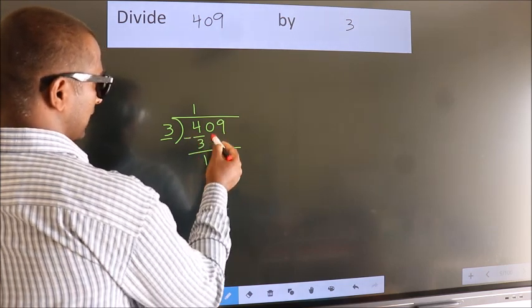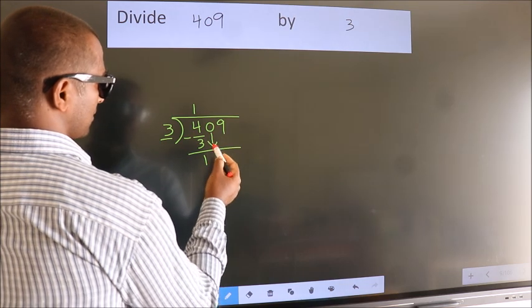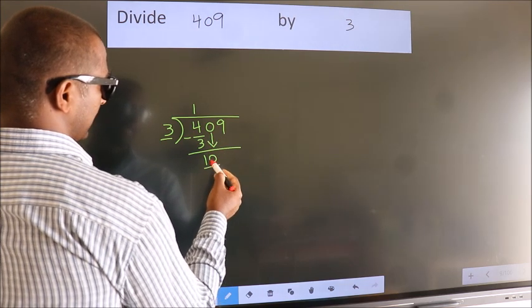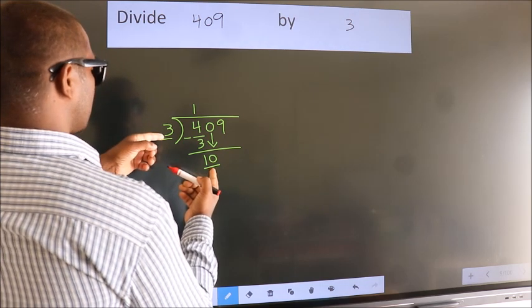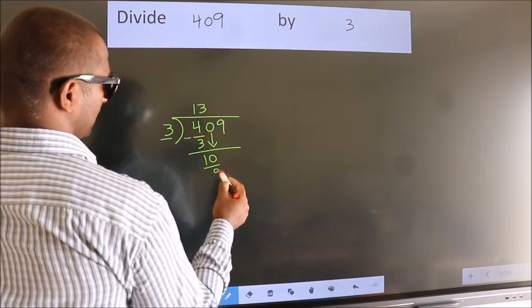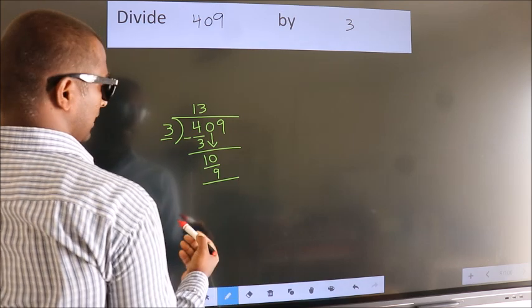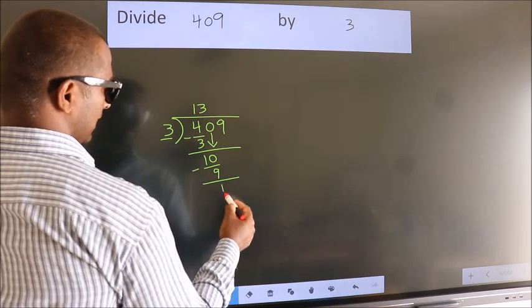After this, bring down the beside number. So 0 down. So 10. A number close to 10 in 3 table is 3 3s 9. Now we subtract. We get 1.